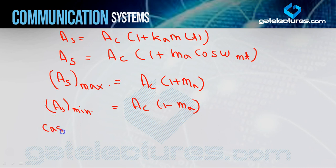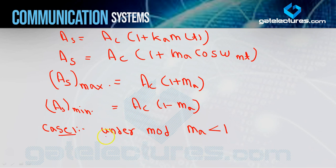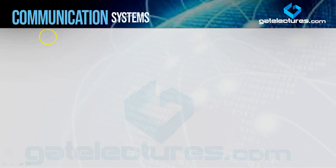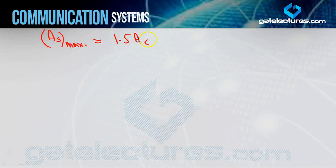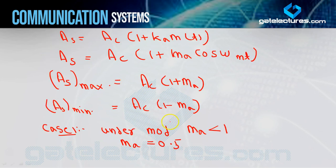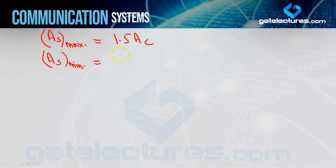Case 1 is under modulation. Under modulation means the modulation index m_a is less than 1. For better understanding, let's assume m_a = 0.5. So AS_max = A_C × 1.5 = 1.5 A_C, and AS_min = A_C × (1 − 0.5) = 0.5 A_C.